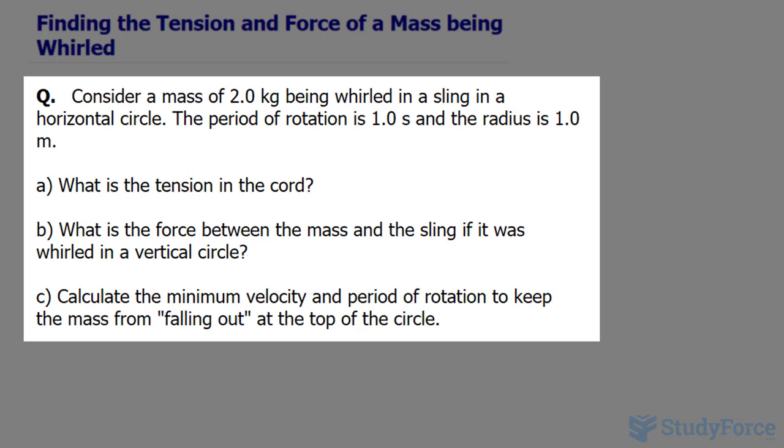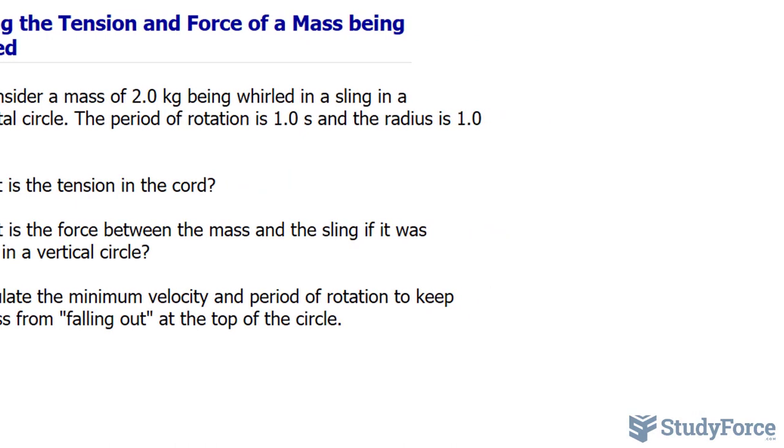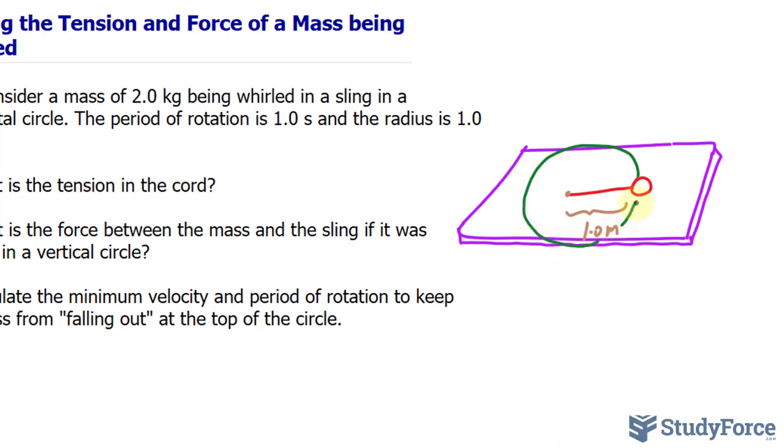For question A, what is the tension in the chord? I want to start off by making an illustration to show you what is happening. Let's say that we have a chord and at the end of the chord is a mass. The chord from the center where it's being whirled is 1.0 meters and it's on a horizontal surface. So let's look at this from a bird's eye view. That is a table, a 3D table, and it's going around in a perfect circle. Mind you that is not a perfect circle that I've drawn but you get the idea.